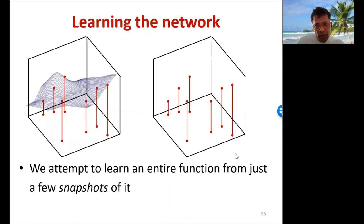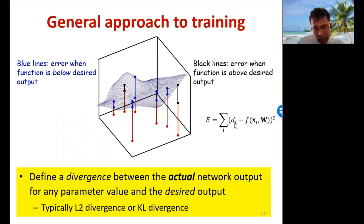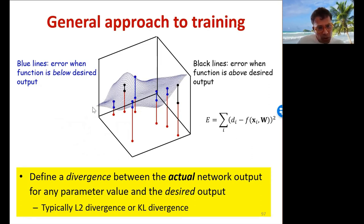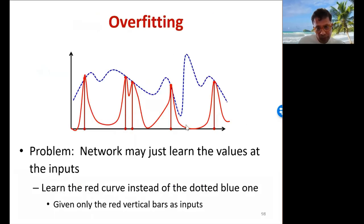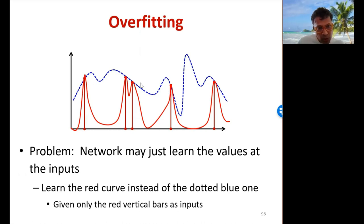We try to learn the entire function from just a few snapshots of the input-output relationships. To do this, we define a divergence between the actual output of the network and the desired output, and then estimate the network parameters to minimize the average divergence over the training instances. But the network may just end up learning to predict the outputs at exactly the training inputs and be arbitrary elsewhere — learning the red curve instead of the desired blue curve.